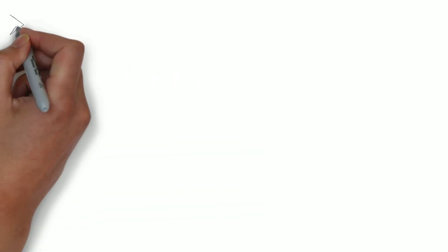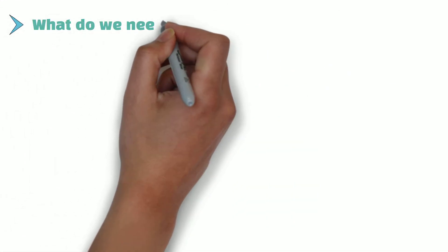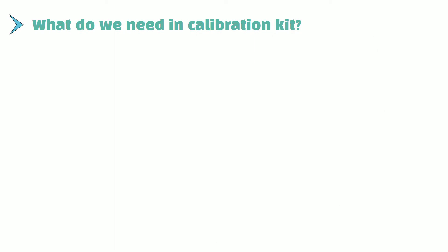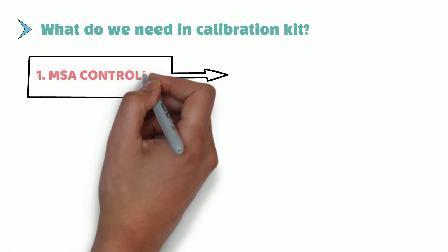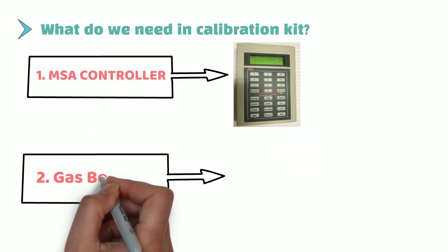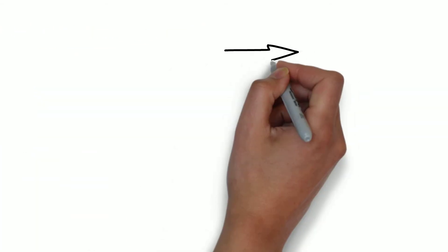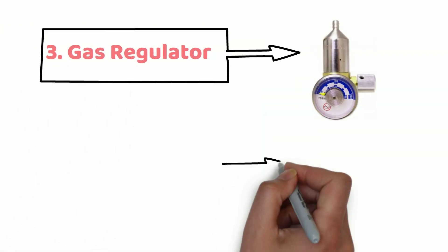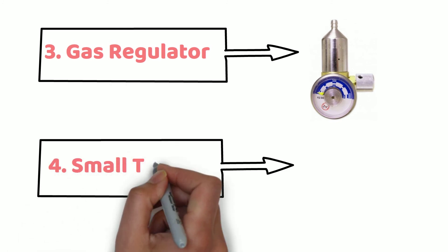So what do we need in calibration kit? First we need MSA controller. Second we need calibration gas bottle. Third we need gas regulator. Last but not least, we also need small tube.